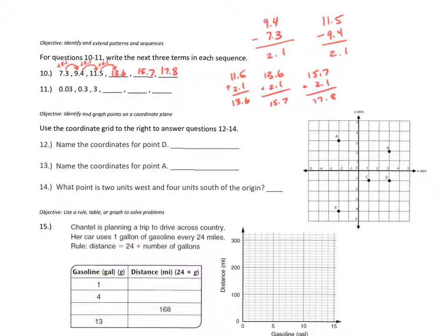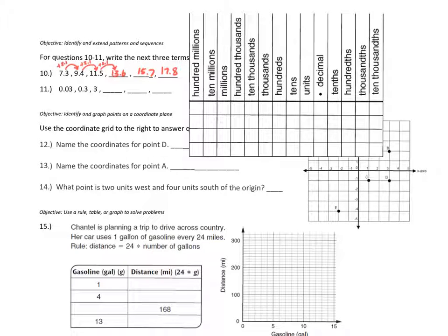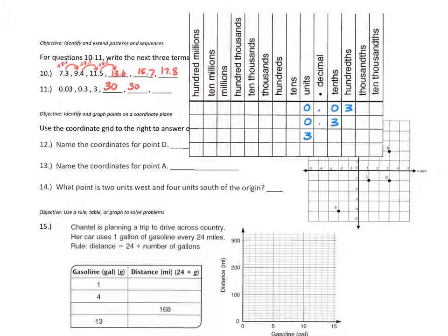For question 11, I'll use a place value chart because one digit remains the same throughout the sequence — there's a 3 in every number. Filling in the chart: the first number is 0.03, the second is 0.3, then 3. The 3 is shifting one place to the left each time, which means multiplying by 10. Continuing: 3 times 10 is 30, then 300, then 3000.